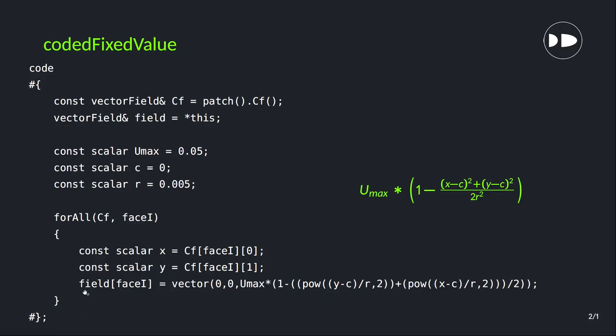Then we define field[face_i], that means for this particular field we want to calculate for all the faces. This function we want to calculate is a vector quantity, velocity. So in the x and y direction there is zero velocity, but in the z direction we want to give this function. Now this function is very simple: Umax times 1 minus pow, which stands for power, so power of (y minus c) by r squared plus power of (x minus c) by r squared divided by 2. So it's a very simple function.